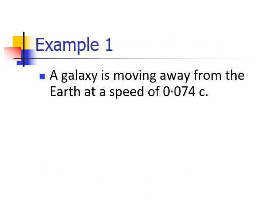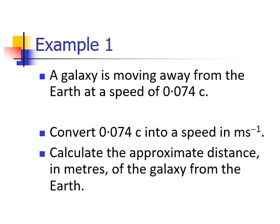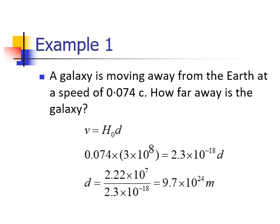Let's look at an example. We've got a galaxy moving away from the Earth at a speed of 0.074 c, so 7.4% of the speed of light. We might be asked to convert that into meters per second and then work out the distance of this galaxy from the Earth. So we multiply 0.074 times 3 times 10 to the 8, which gives us our recessional velocity. That equals Hubble's constant, 2.3 times 10 to the minus 18, times the distance. We can rearrange for D to get the distance of 9.7 times 10 to the 24 meters.